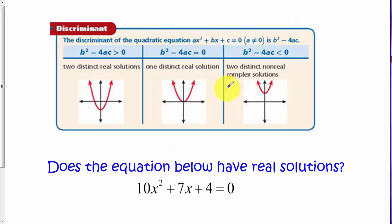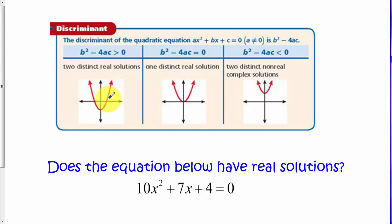Sometimes we may just be interested in knowing whether a problem has real solutions or not, or whether there is a single unique solution. To determine that, we can look at the portion of the quadratic formula under the square root, which is called the discriminant. If the discriminant is positive, we have two distinct real solutions and two x-intercepts. If it equals exactly zero, we have a single real solution — the vertex lies on the x-axis. If the discriminant is negative, as in the last problem, we have no real solutions and two distinct complex solutions.